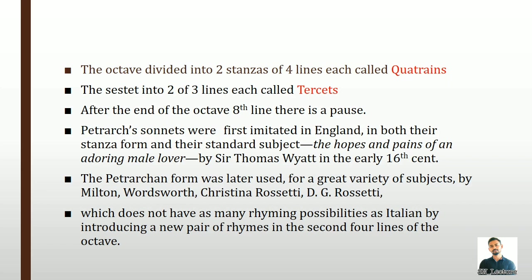Wyatt entirely fails to capture the warm sensuous color and delicate music of the Italian poet. His great contemporary, the Earl of Surrey, also wrote sonnets in which he expressed his entirely imaginative love for Geraldine, or Lady Elizabeth Fitzgerald. These two writers, Thomas Wyatt and the Earl of Surrey, started to write sonnets in English, which does not have as many rhyming possibilities as Italian, by introducing a new pair of rhymes since it was imitated from Italian.